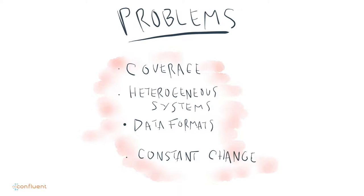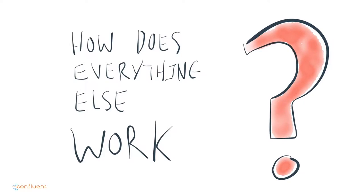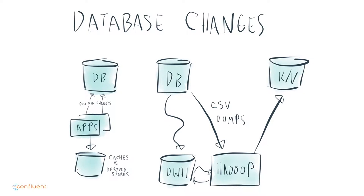One of the journeys we went through at LinkedIn was really trying to figure out the scope of this problem and how it could be better solved. We did a survey of what types of things we had. The first type was data in databases, and we had lots of ways of getting it around — real-time caches and key-value stores populated by application changes, periodic dumps of CSVs for Hadoop. Some of these were real-time, some were batch end-of-day. Nothing was very systematic.